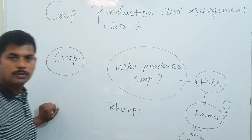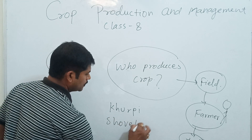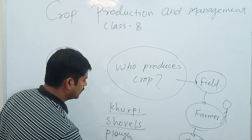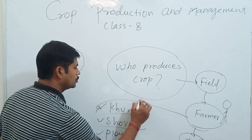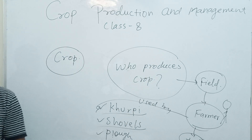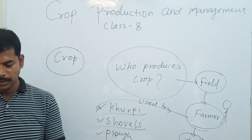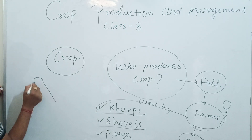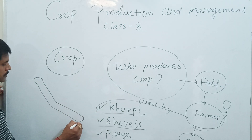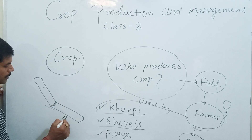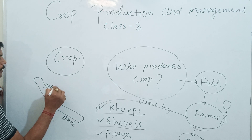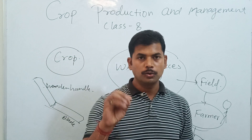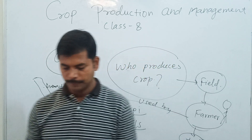Those tools are: Kurpi, Sickle, and Plough. These are some tools which are going to be used by farmers. Kurpi is a short-handled cutting tool with a flat blade. You have seen this type of tool in the field — it has a blade and a wooden handle.